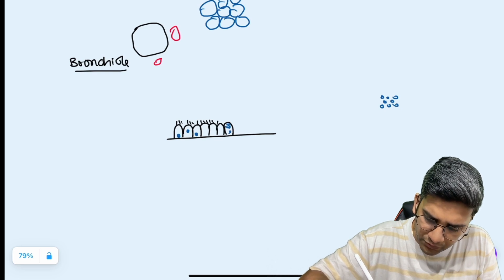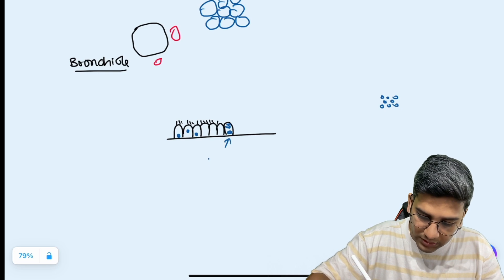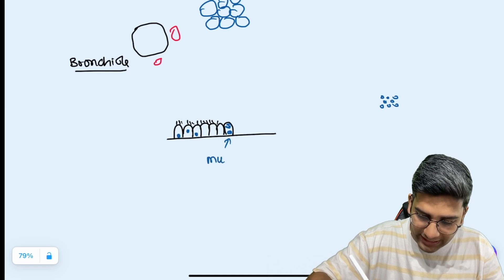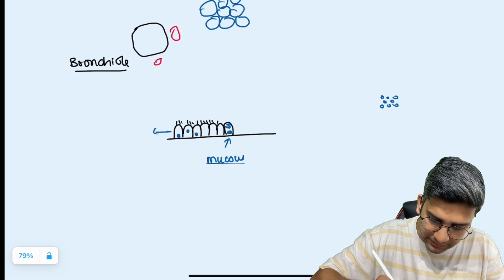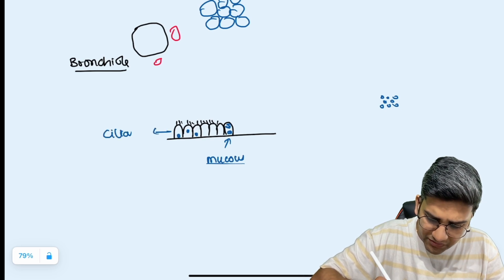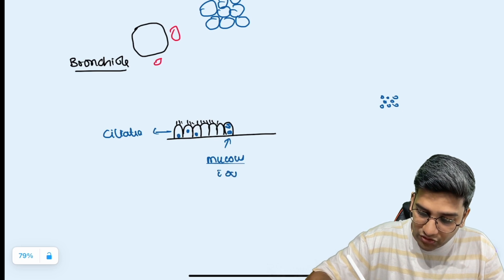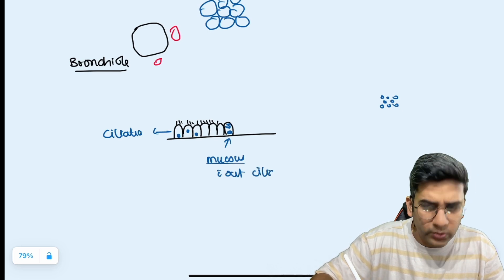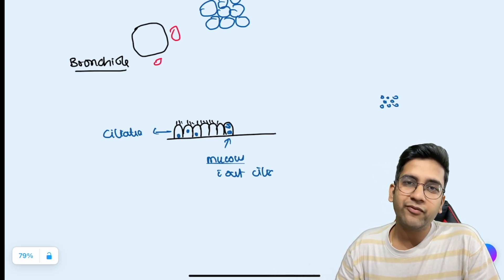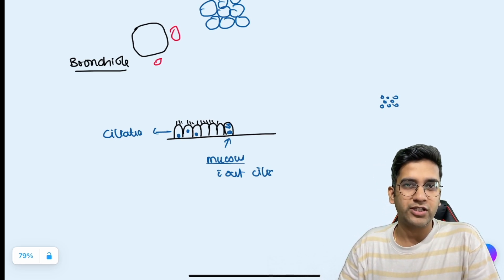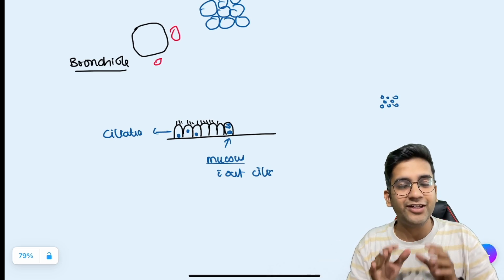In between the ciliated columnar cells, you will have mucin-secreting cells. You can identify them by the good amount of mucin at the top and the nucleus at the bottom. Mucin-secreting cells do not have cilia. So you have ciliated epithelium, and in between them mucin-secreting cells without cilia — that's a very classical finding seen in every bronchiole lining.